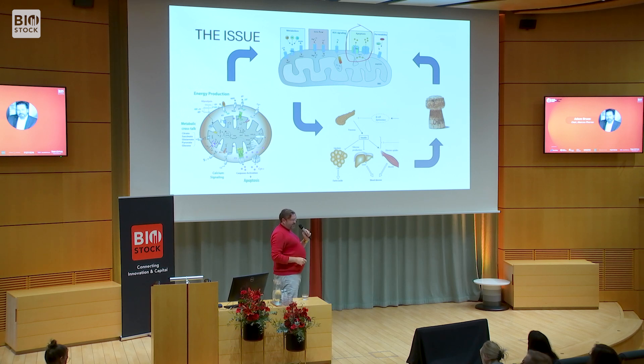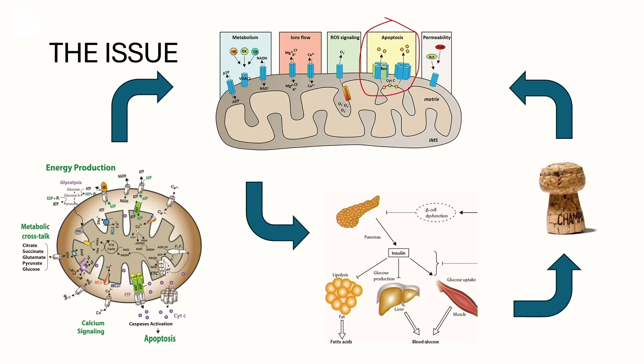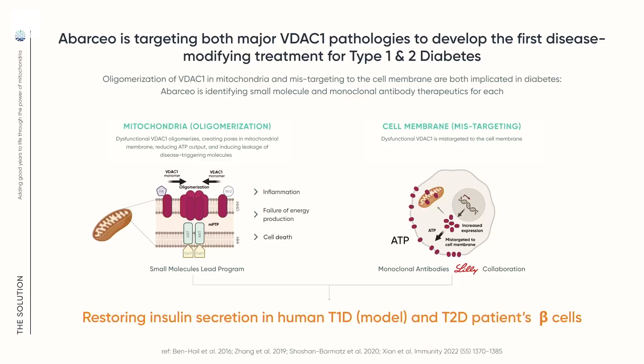Our drug plugs the hole — up there where I made a little red circle. We plug those holes, and then the cells go back to working and actually producing insulin. Here's the more scientific slide, which is very nice, showing the mitochondria oligomerization and the cell membrane mis-targeting.